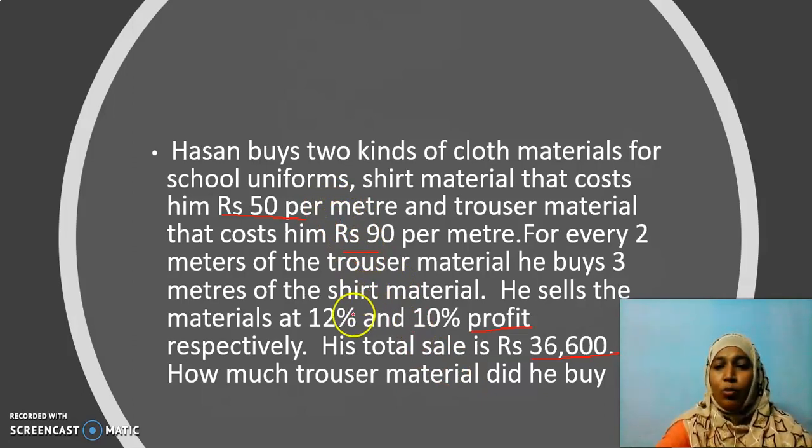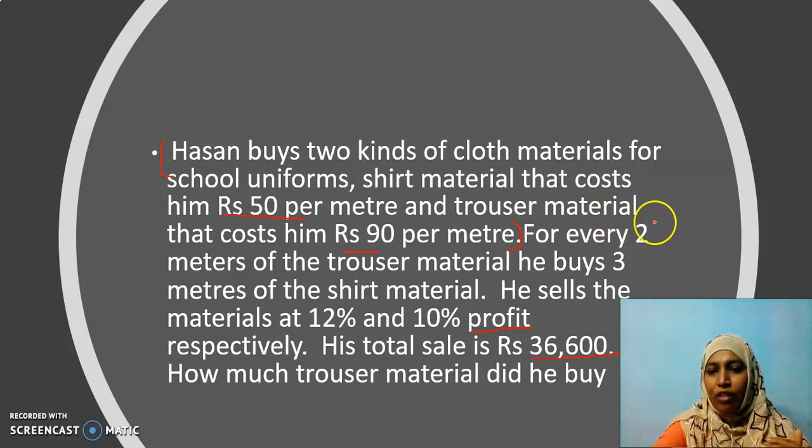If you just read the question, you may feel something is there, wouldn't follow anything. So let us put in crisp. First, they have mentioned the cost price per meter for two materials. In the second part, for every 2 meters of trouser material, he buys 3 meters of shirt material. Can you relate it to something which you already know? It is nothing but 2 is to 3. He buys material in the ratio 2 is to 3. This is 2 for trouser and this 3 for shirts.